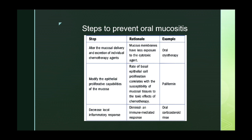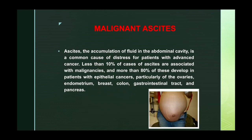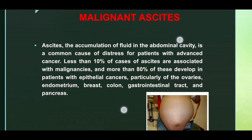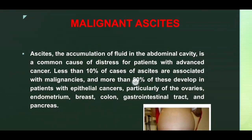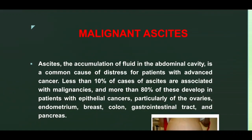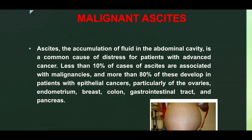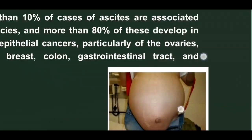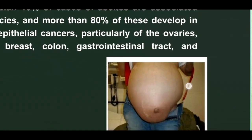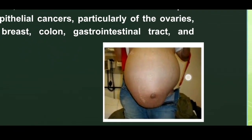Malignant ascites — accumulation of fluid in the abdominal cavity — is a common cause of distress for patients with advanced cancer. Less than 10% of all ascites cases are associated with malignancies, but more than 80% of malignancy-related ascites develop in patients with epithelial cancers, particularly of the ovaries, endometrium, breast, colon, GI tract, and pancreas. This picture shows a patient with huge ascites with an inverted umbilicus.